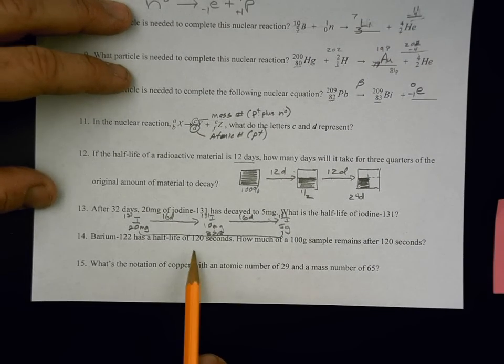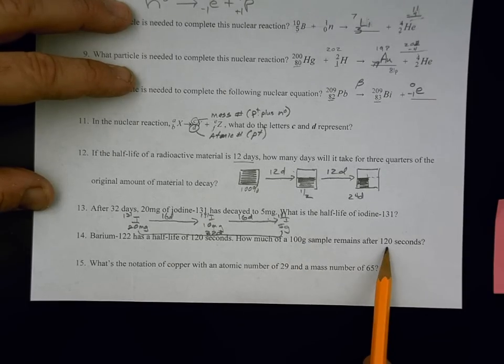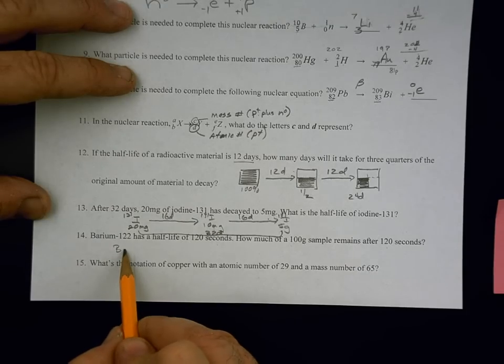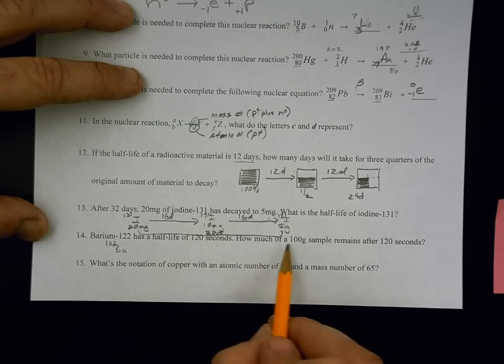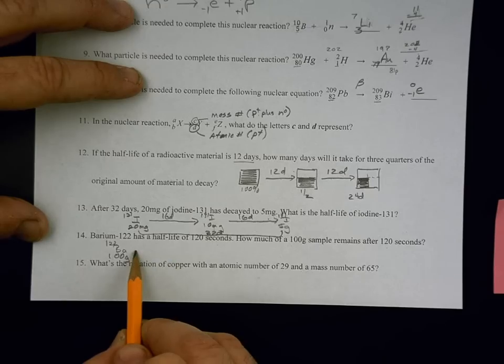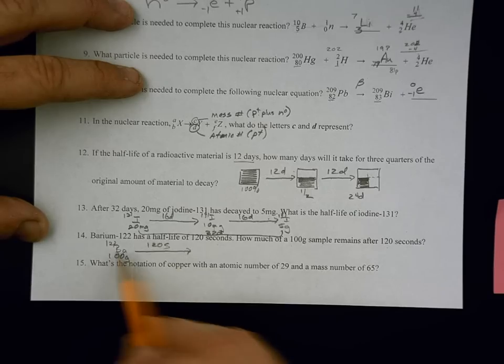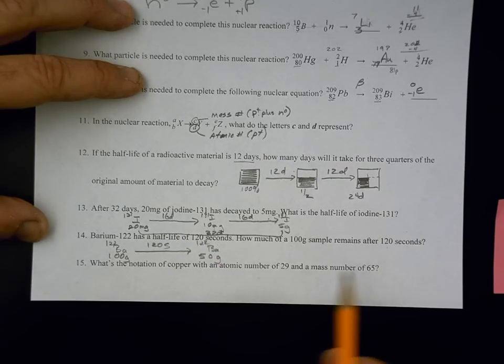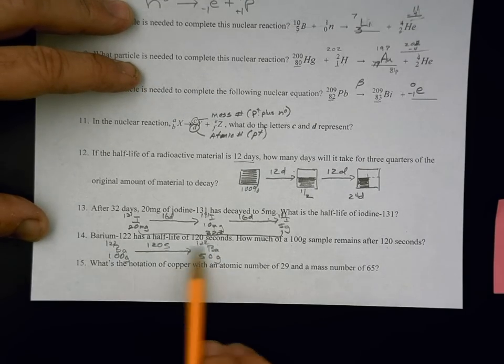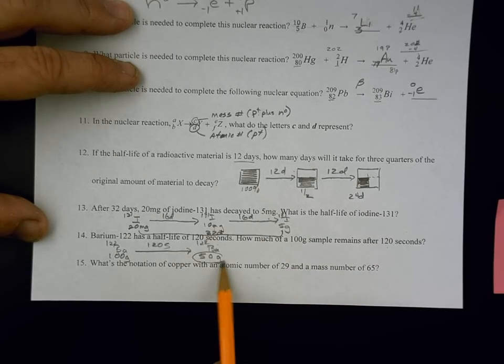Barium-122 has a half-life of 120 seconds. How much of a 100-gram sample will remain after 120 seconds? So we've got barium-122, its half-life is 122. We start with 100 grams. It says after 120 seconds, we will have half of the remaining barium, which will be 50 grams of barium-122 remaining. After one half-life, there will be 50 grams remaining.